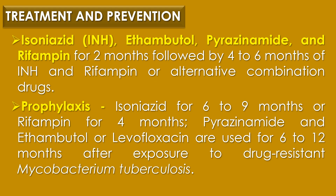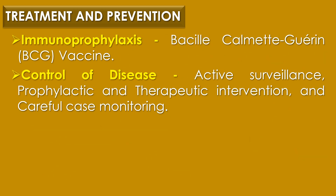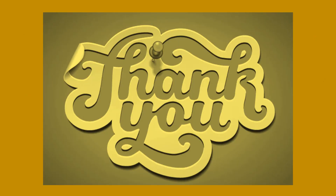Finally, treatment and prevention. Prolonged treatment with multiple drugs is required to prevent drug-resistant strains of Mycobacterium tuberculosis. This includes isoniazid, ethambutol, pyrazinamide and rifampin for two months, followed by four to six months of isoniazid and rifampin or an alternative drug combination. Prophylaxis can include isoniazid for six to nine months or rifampin for four months. Pyrazinamide and ethambutol or levofloxacin are used for six to twelve months after exposure to drug-resistant Mycobacterium tuberculosis. Immunoprophylaxis with the BCG vaccine is highly recommended, along with active surveillance, prophylactic and therapeutic interventions, and careful case monitoring. That's all about Mycobacterium tuberculosis.